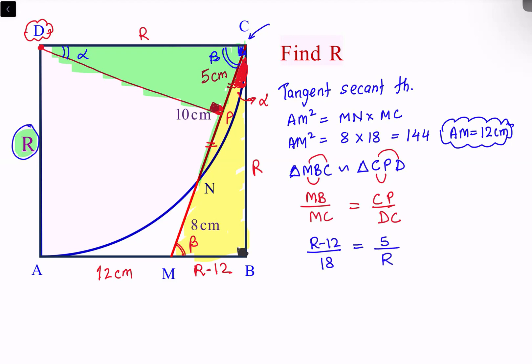Cross multiply: we'll get R times (R minus 12) is 90. So this is R square minus 12R equals 90.